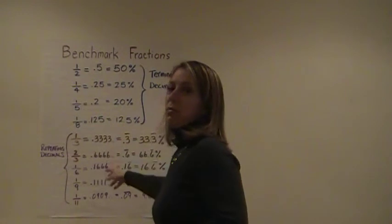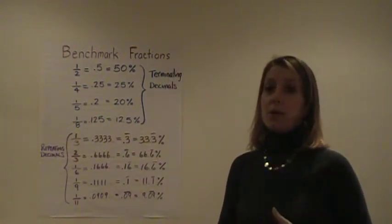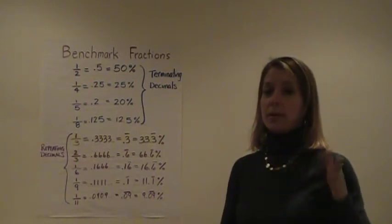For two-thirds, we double everything we did for one-third, so we get .6, lots of .6s. Some calculators will actually show .66666667.